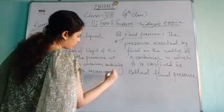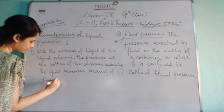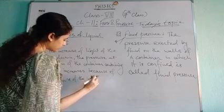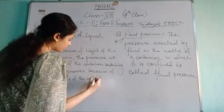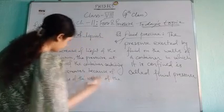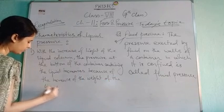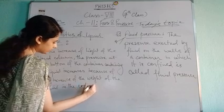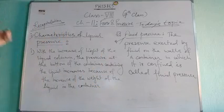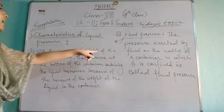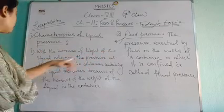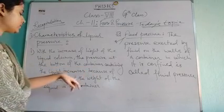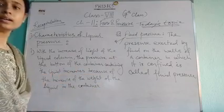This is because of the increase of the weight of the liquid in the container. With the increase of the height of the liquid column, the pressure at the bottom of the container containing the liquid increases because of the increase of the weight of the liquid in the container.